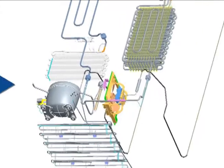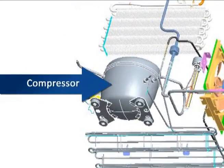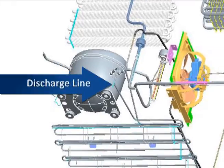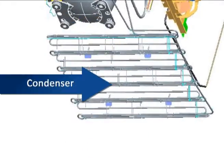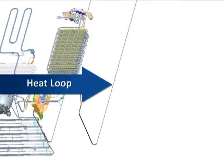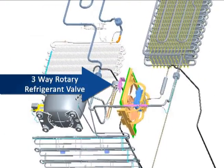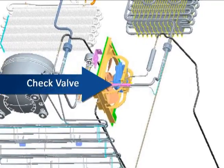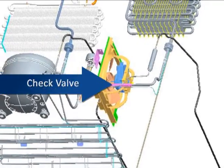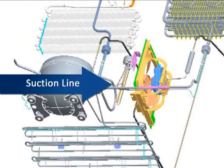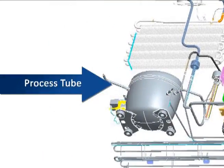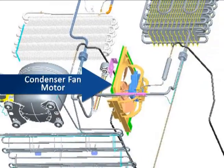Now let's identify the remaining components: compressor, discharge line, condenser, heat loop, dryer, three-way rotary refrigerant valve, check valve, suction line, process tube, and condenser fan motor.